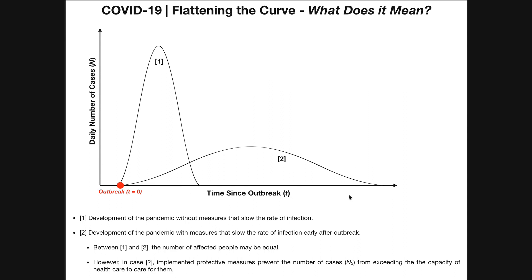On the horizontal axis, this represents time since the outbreak. This red dot represents the outbreak — time equals zero, the onset of it. On the vertical axis, we have the daily number of cases in terms of number of people. I've got two curves here. Curve one spikes upward much more quickly and then goes down much more quickly — it's the taller of the two.